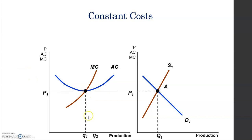In the first case, a constant cost industry, in the long run we are in equilibrium where demand equals supply, giving us price P1 and quantity Q1. For the firm, at this price, the price equals marginal cost and equals average cost, so the firm produces its equilibrium quantity with zero profits.